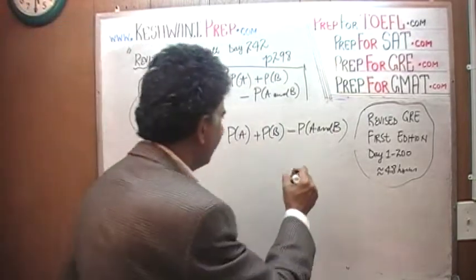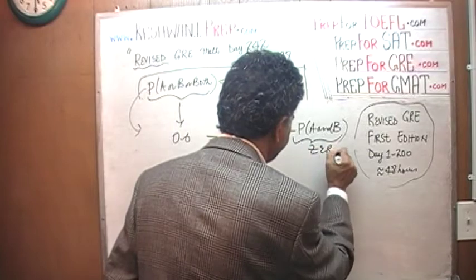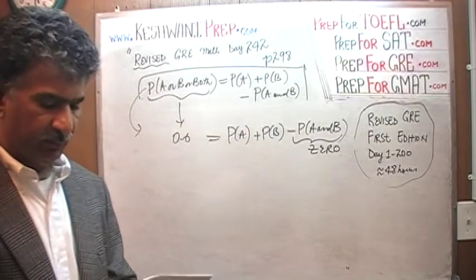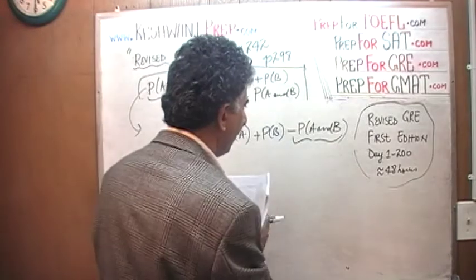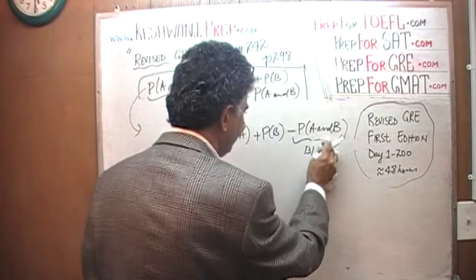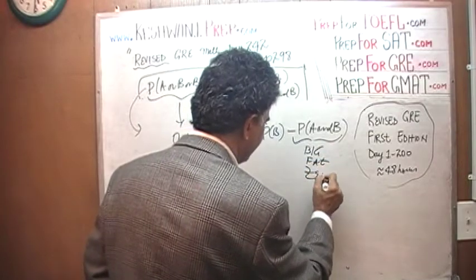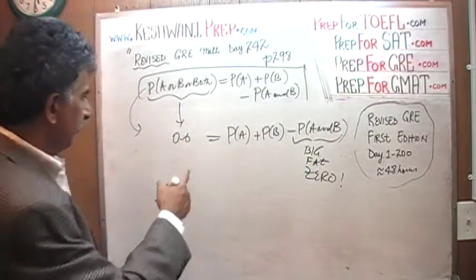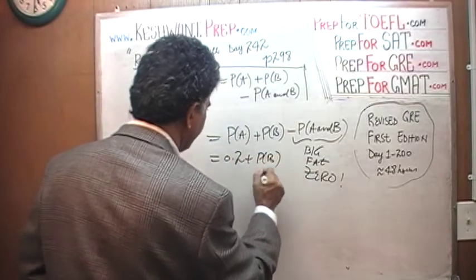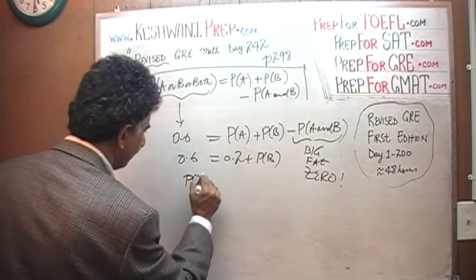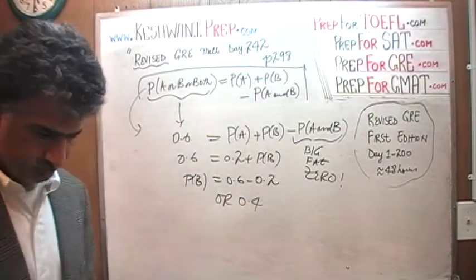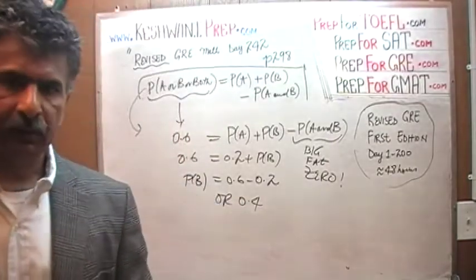Since A and B are mutually exclusive, the probability of A and B occurring at the same time is zero — it cannot happen. So we only have to deal with the remaining terms. They tell us the odds of A is 0.2. Therefore the odds of B is just 0.6 minus 0.2, which is 0.4. That's all there is. These events are called mutually exclusive.